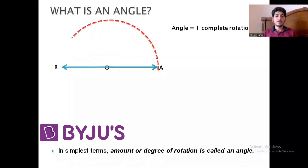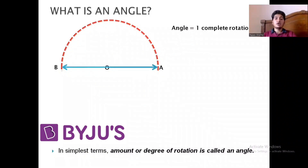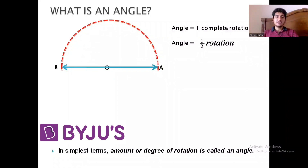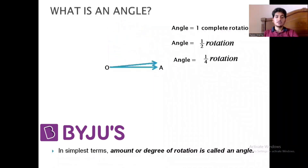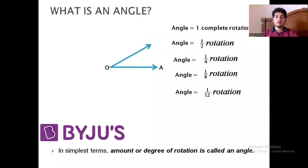Instead of rotating it fully, what if we rotate it in a semicircle? Then the ray has done only half a rotation, so the angle is half a rotation. Similarly, a quarter rotation gives an angle of one-fourth rotation. There can be other angles too — one-eighth rotation and one-twelfth rotation — as shown in the figures. So angle is nothing but the amount of rotation.